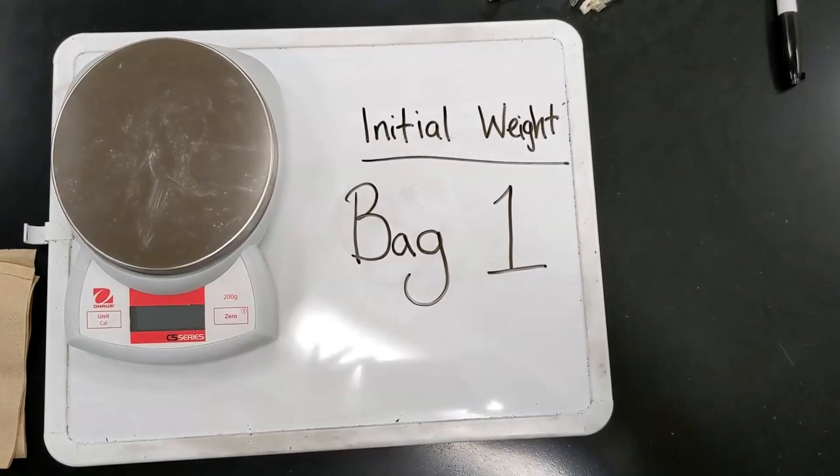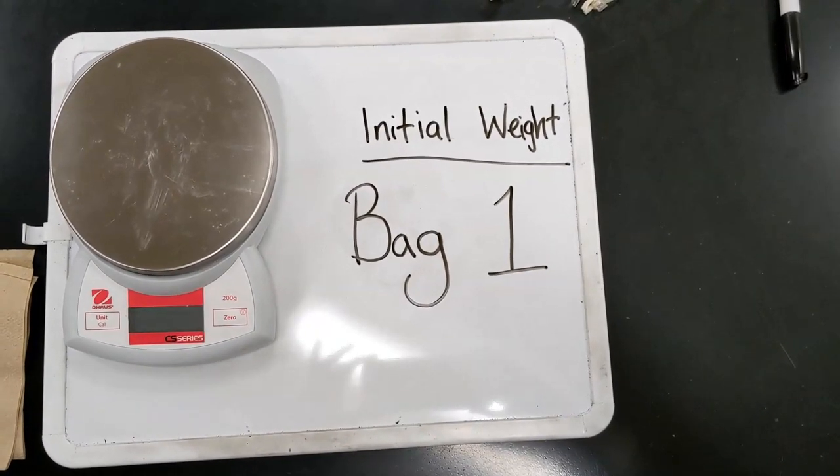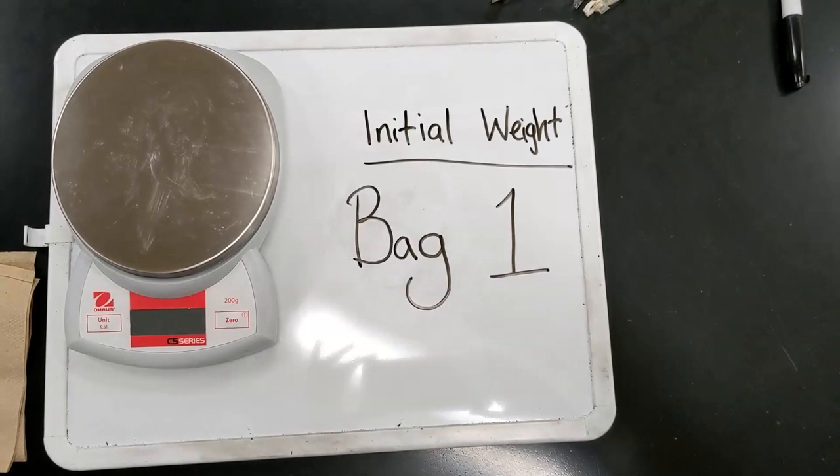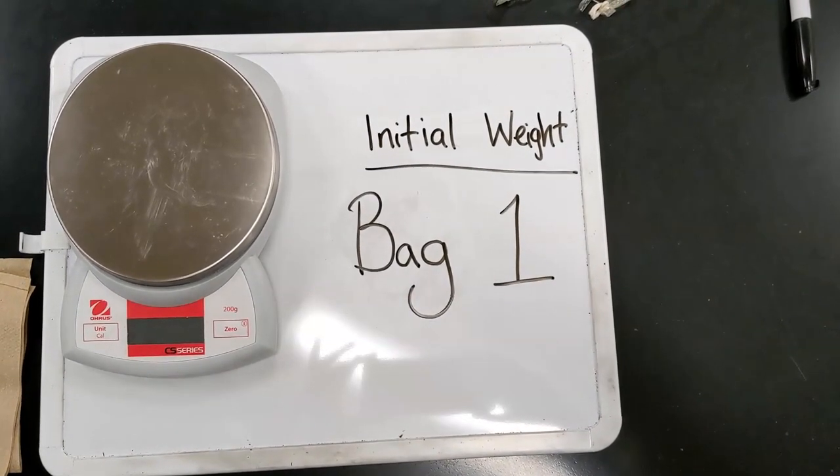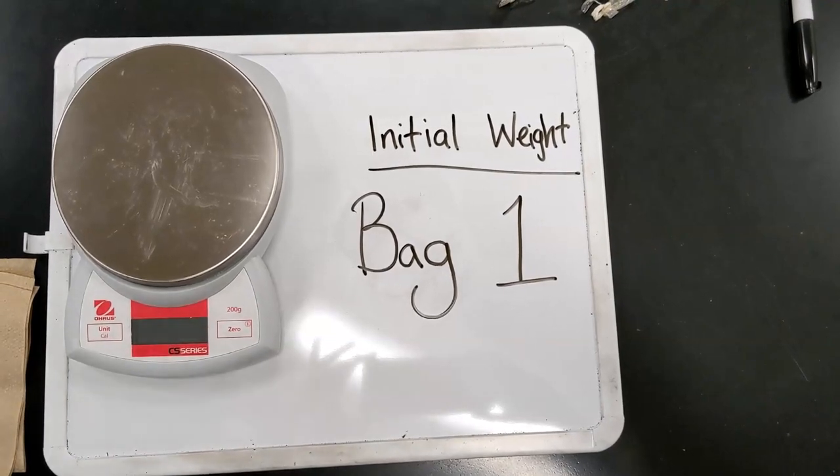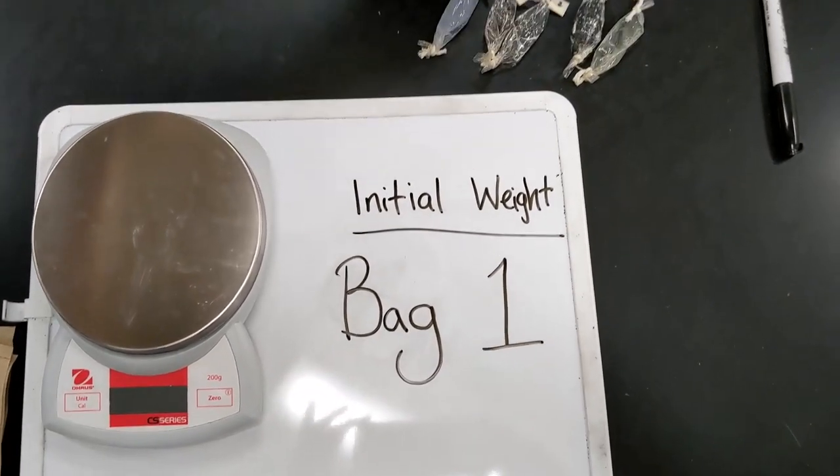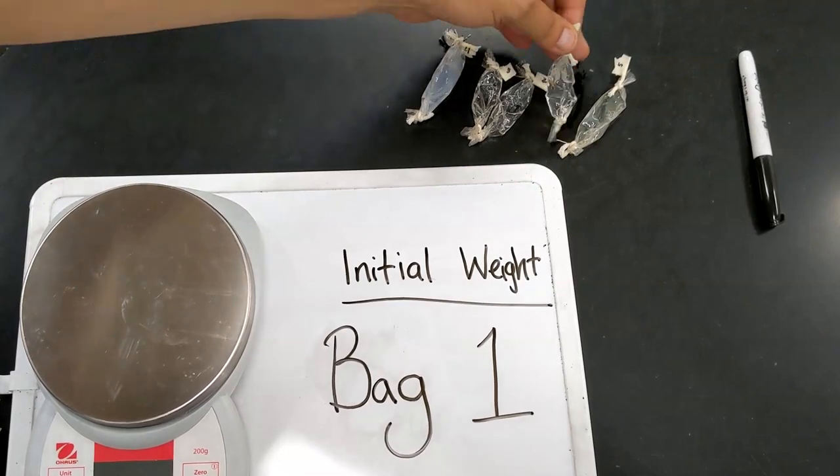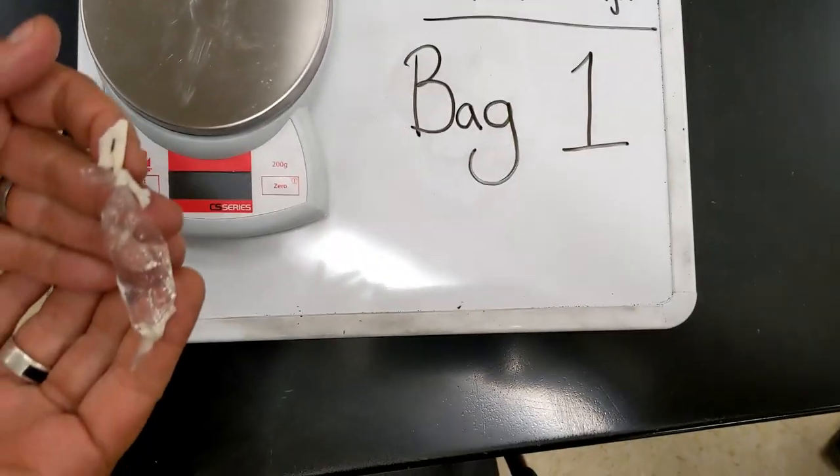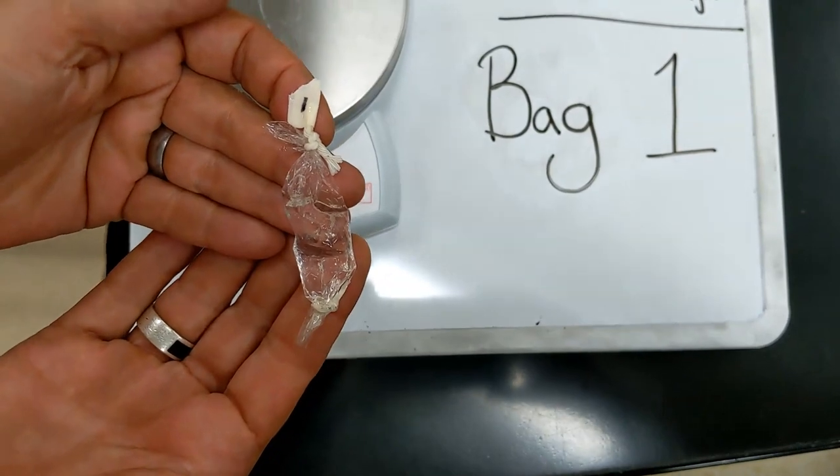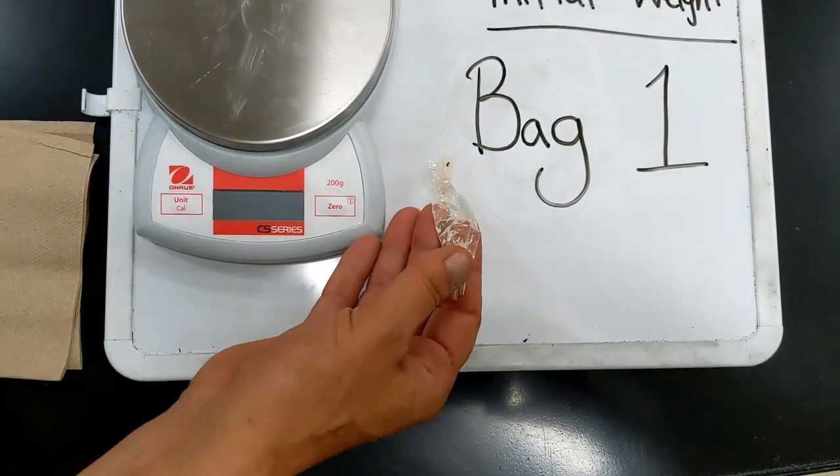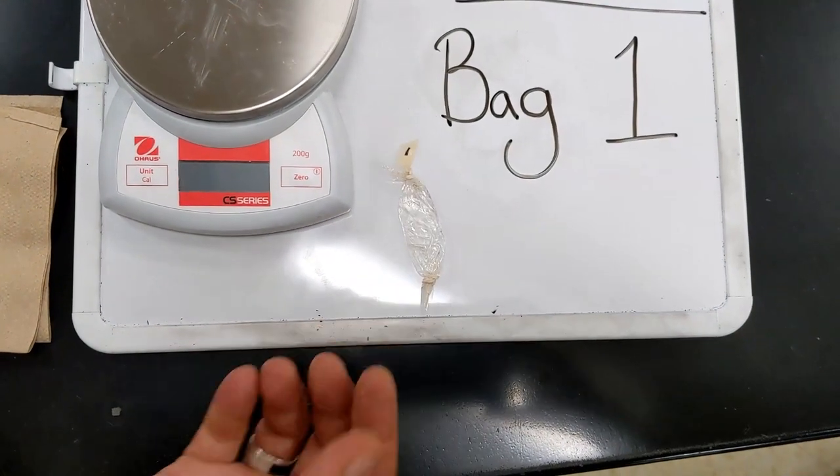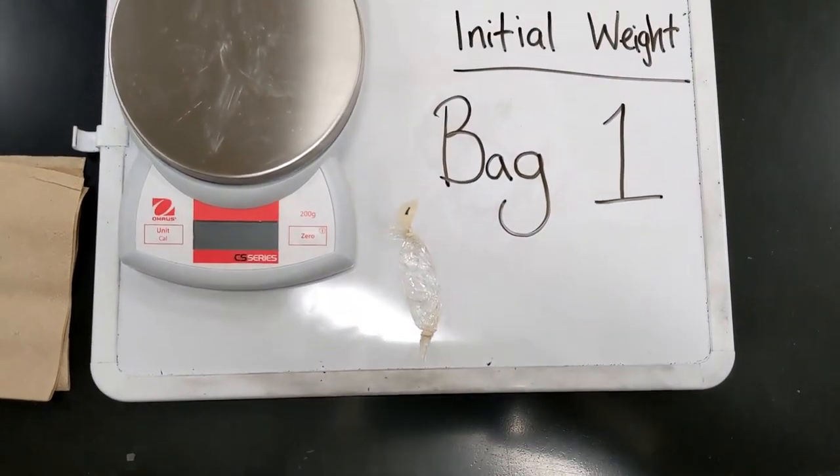So the next part of the procedure, we will demonstrate how you will weigh the bags, and I will show you this with example bag one. We have taken the bags and we have wet them, including the strings, so that when we weigh them intermittently, we don't have the dry weight discrepancy of the strings.